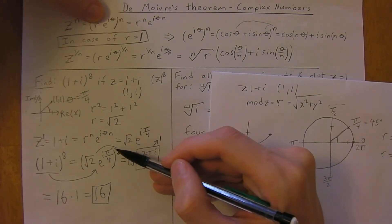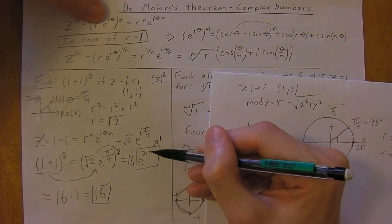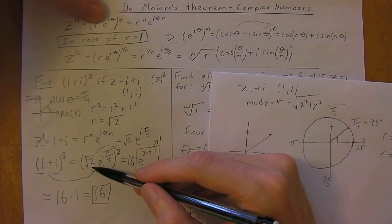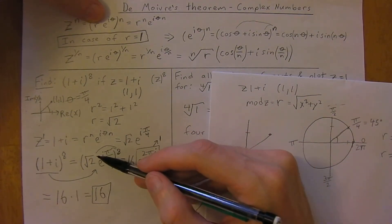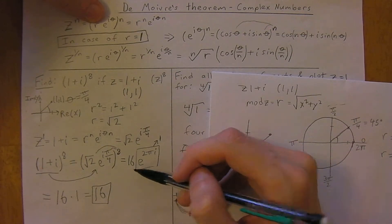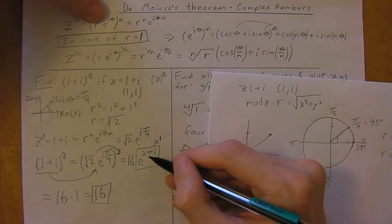If we bring that eighth power inside, we're going to be left with 2 pi. And if we have the square root of 2 to the eighth power, we're going to be left with 16.